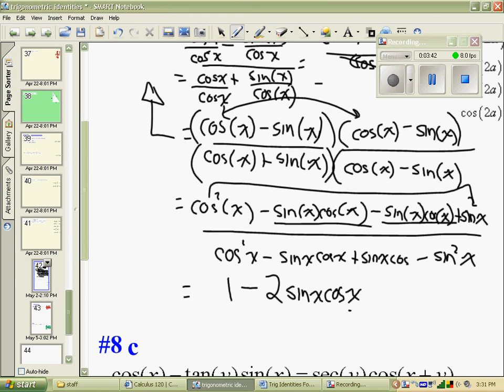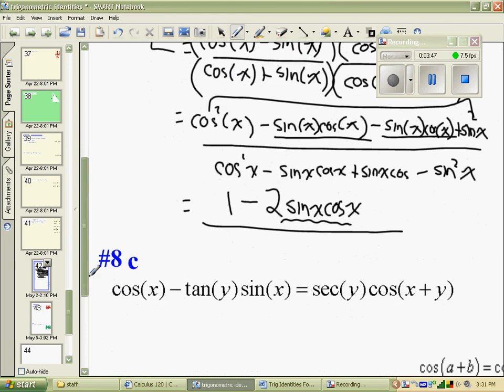In the denominator, I have a minus sin x cos x and a plus sin x cos x. They cancel. So I have cos squared of x minus sin squared of x.